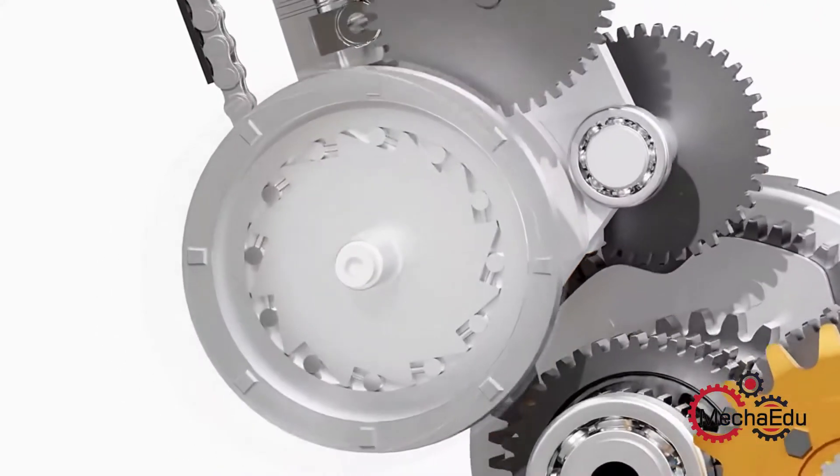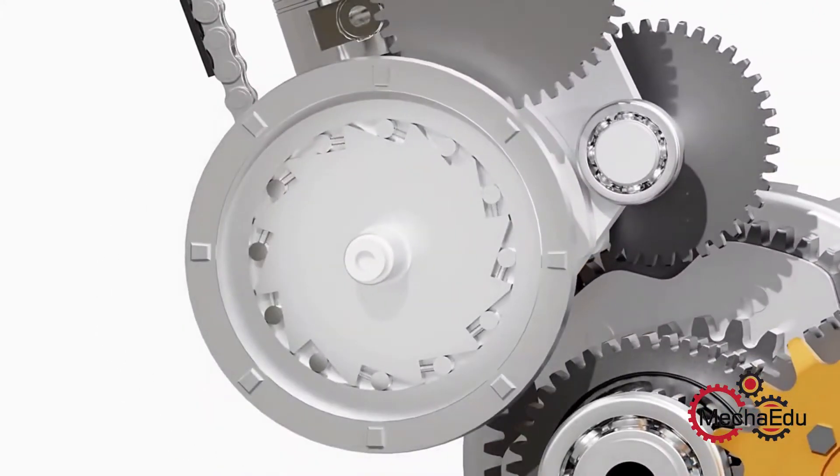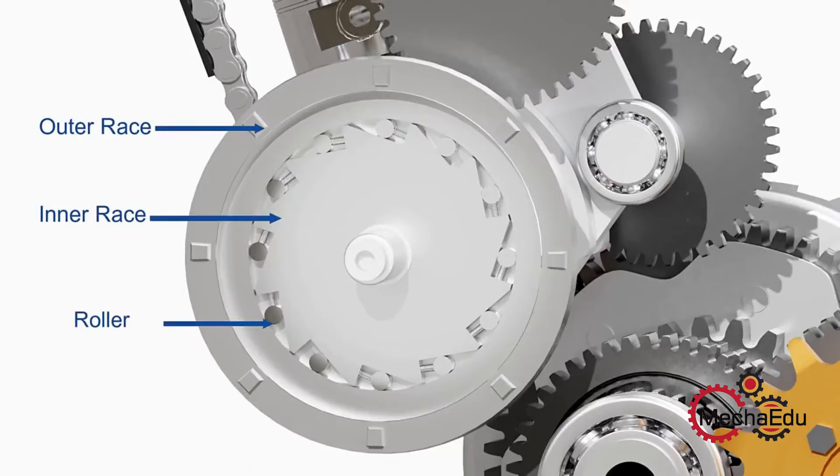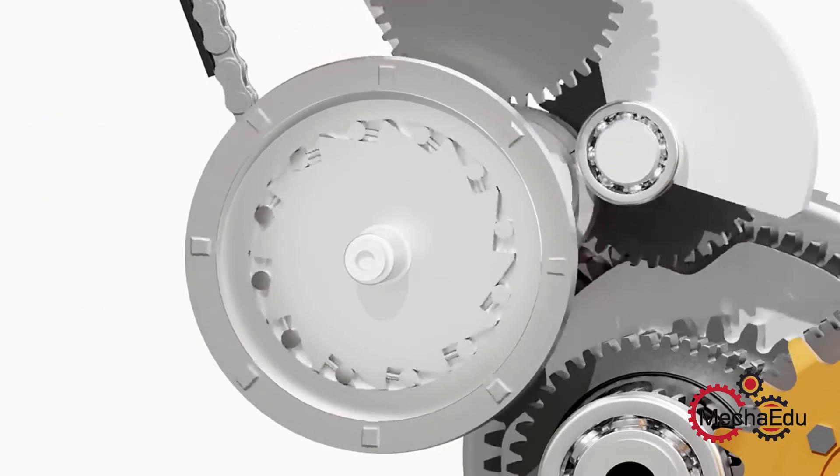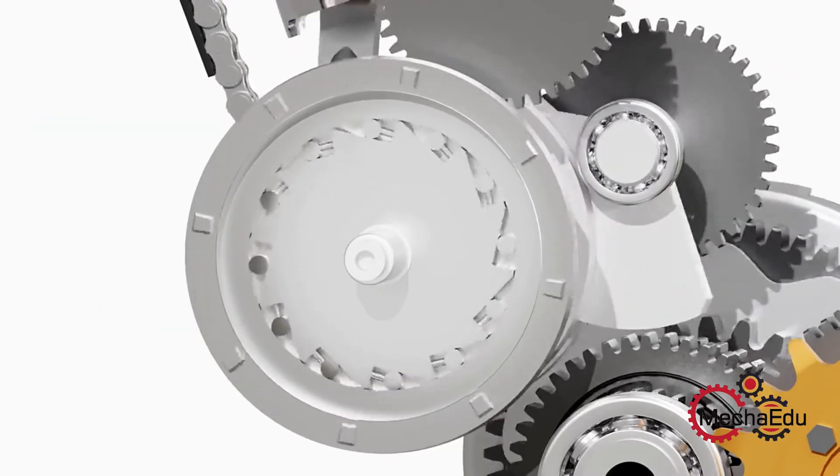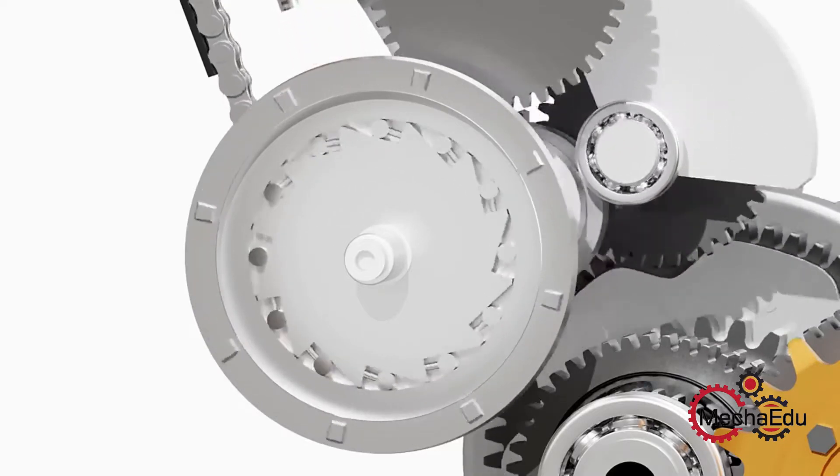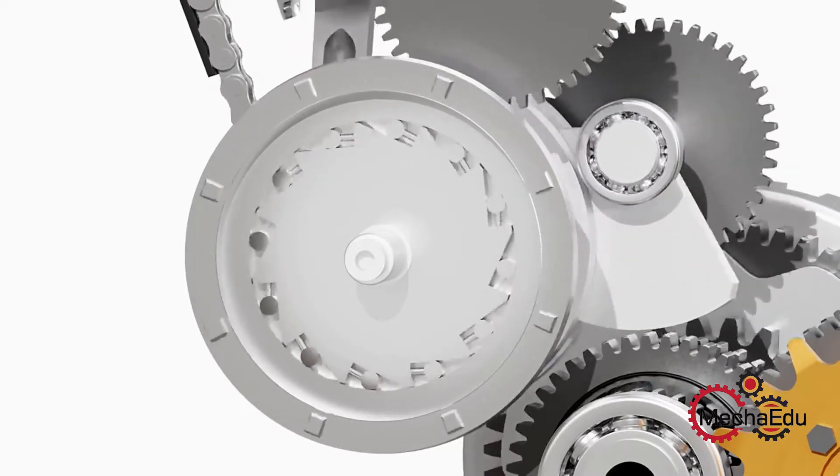This is achieved by using a one-way clutch. The model shown here is of a roller-type one-way clutch. It has an outer race and an inner race with small rollers. As the starter motor spins the outer race in one direction, the rollers get trapped between the surfaces and the power is transferred to the inner race and thus to the crankshaft.